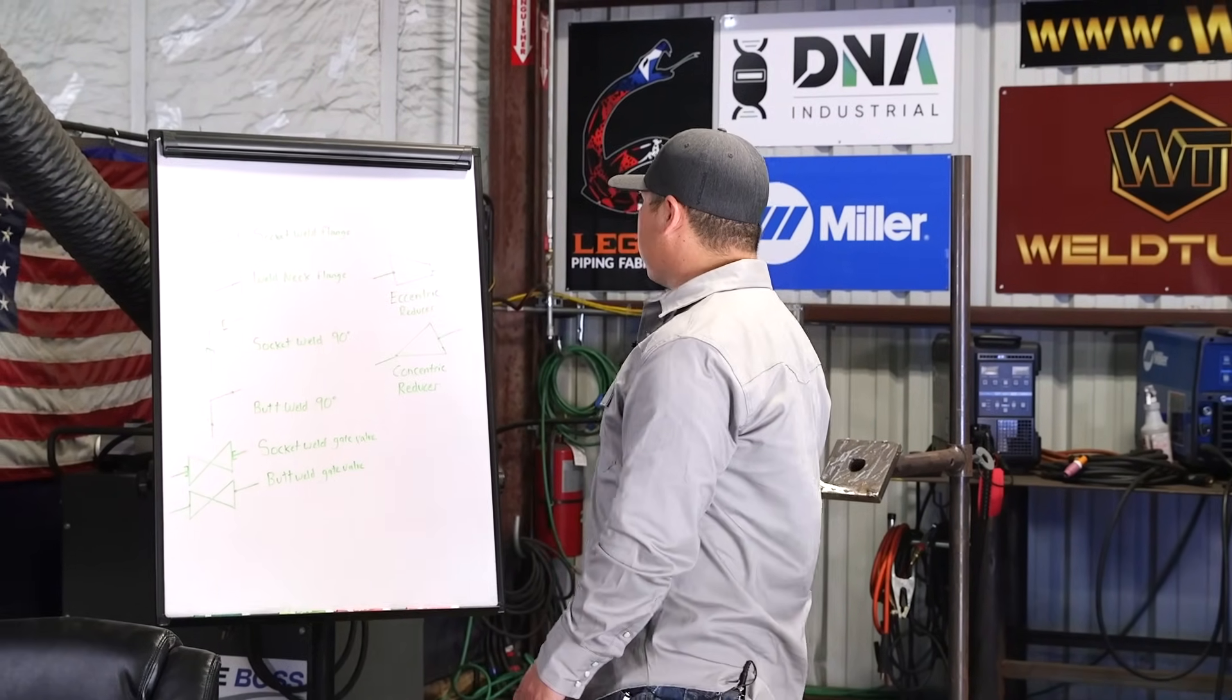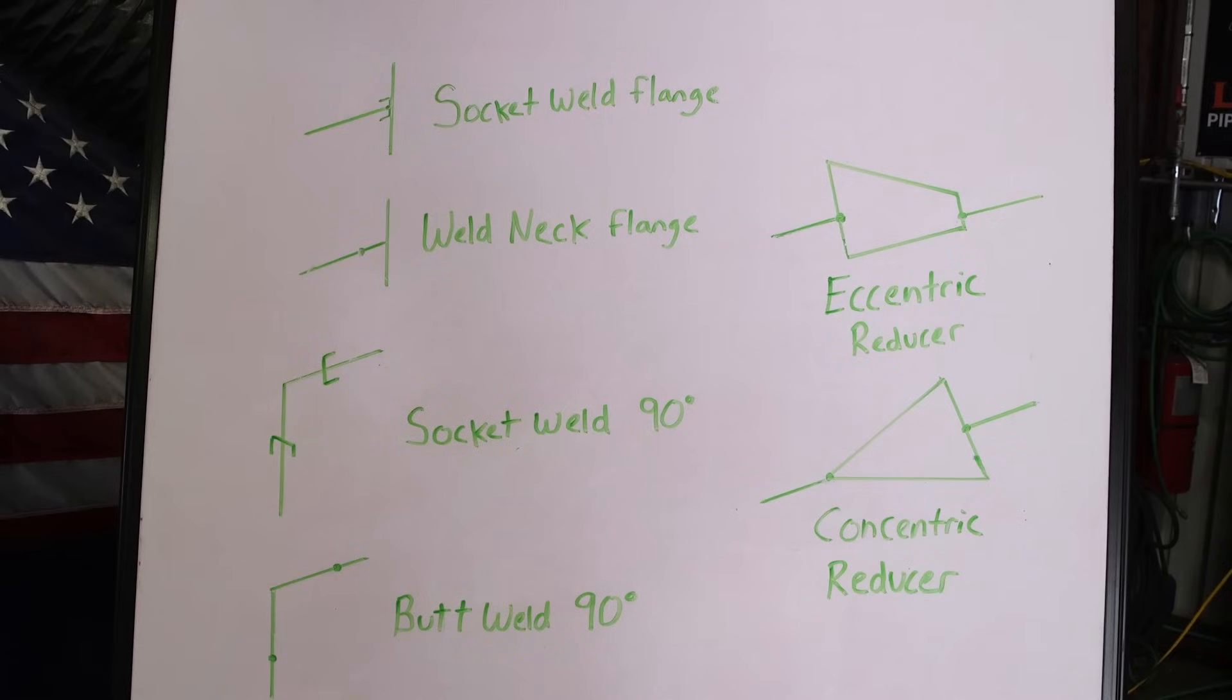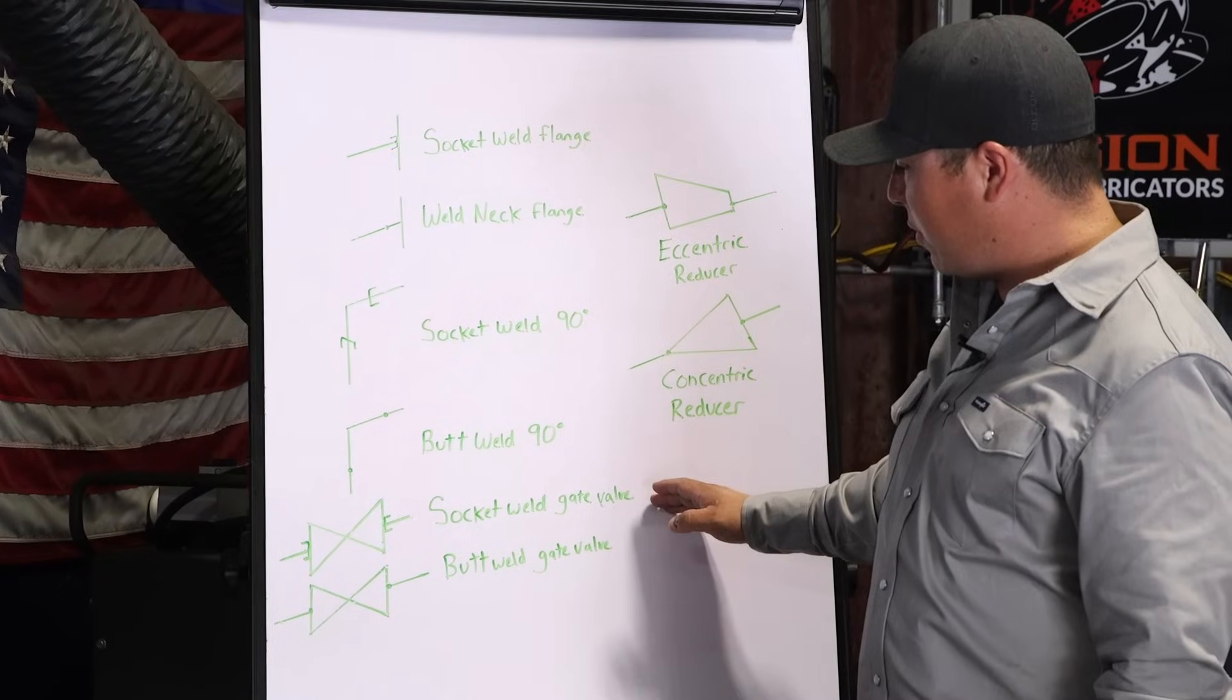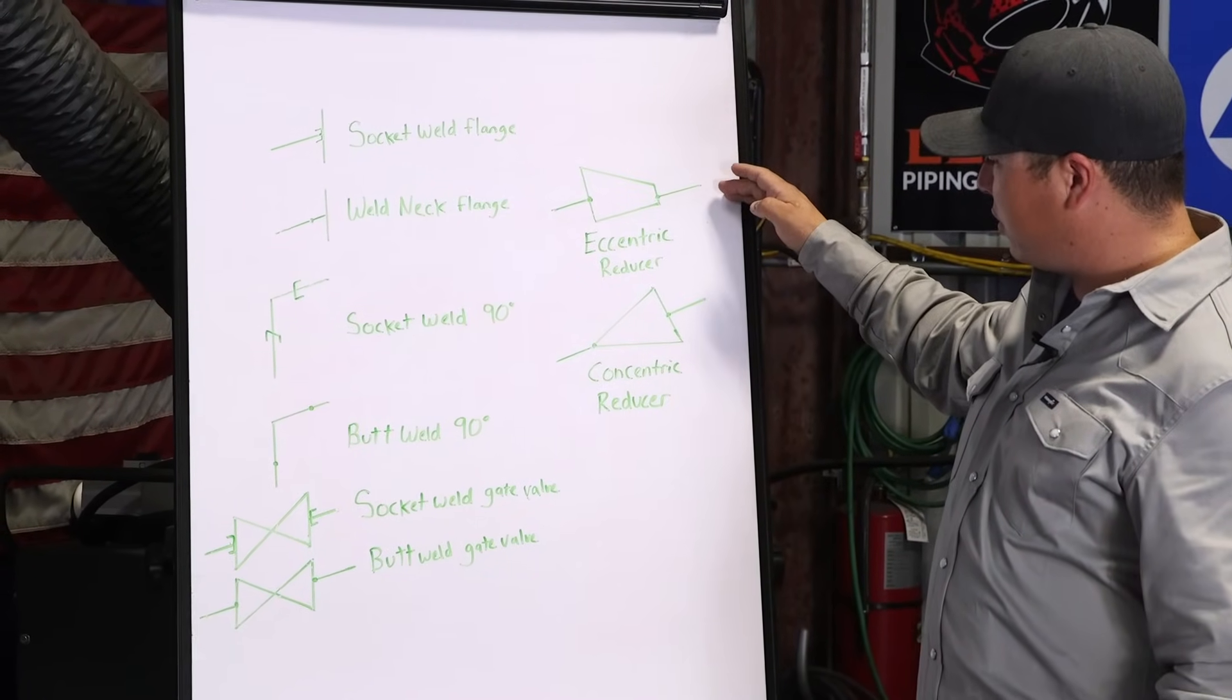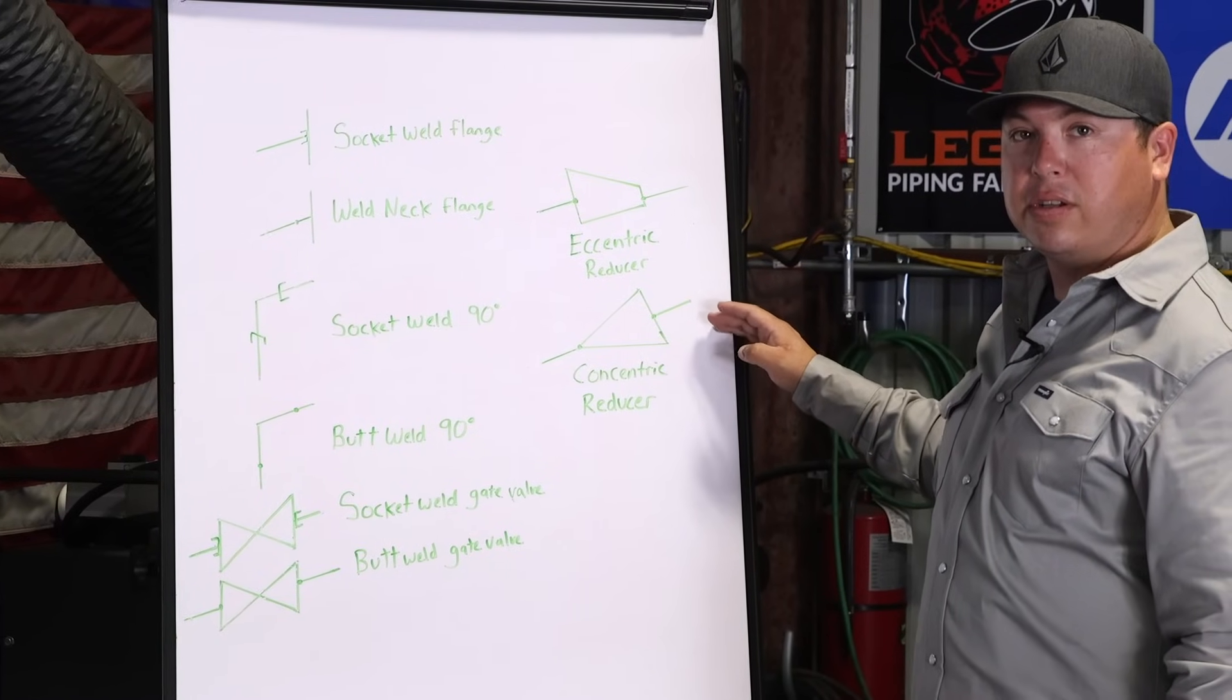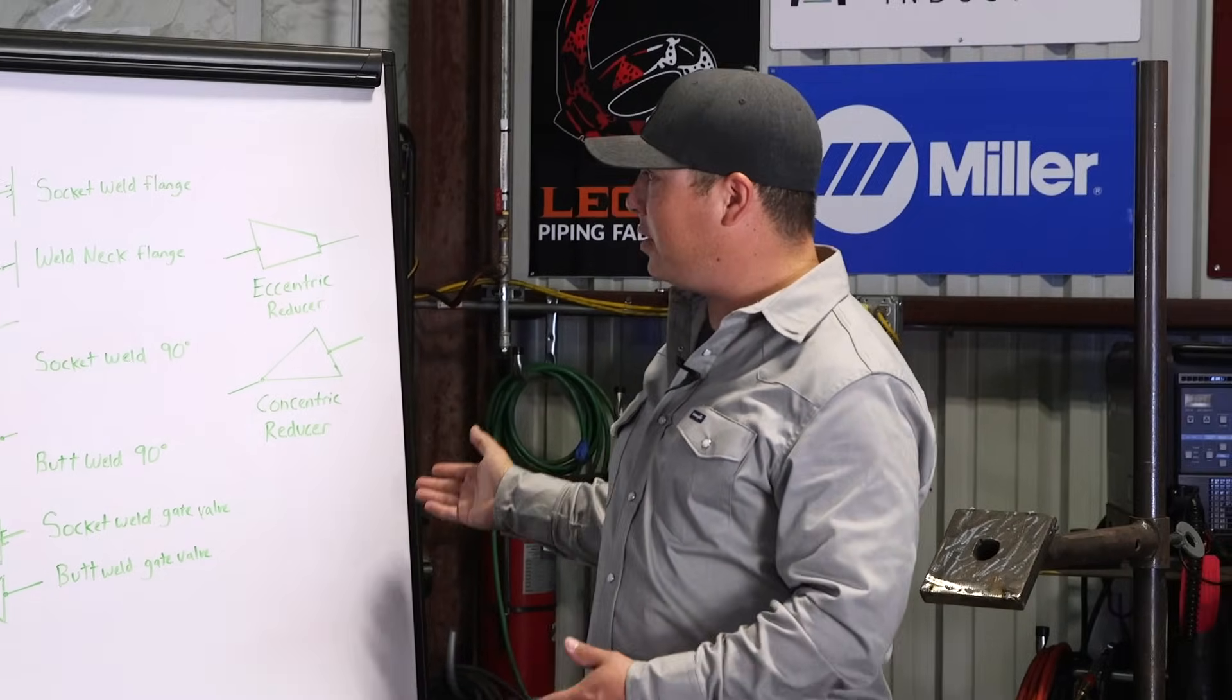Behind me here, I have common fittings and layouts of how isometrics are drawn. Socket weld flange, weld neck flange, socket weld 90, butt weld 90, socket weld gate valve, butt weld gate valve, eccentric reducer, and concentric reducer. These are probably your most common fittings that you'll be dealing with.